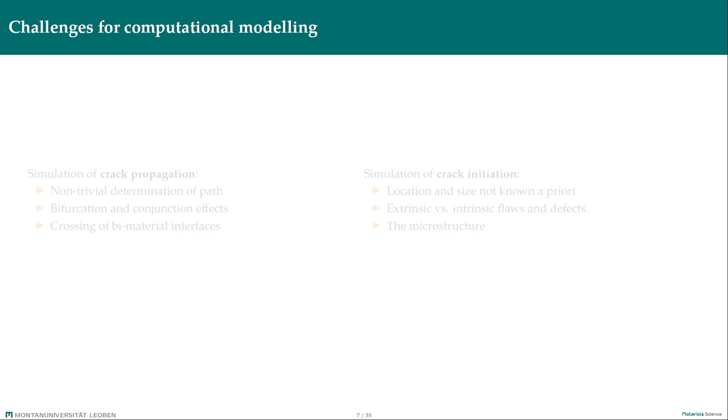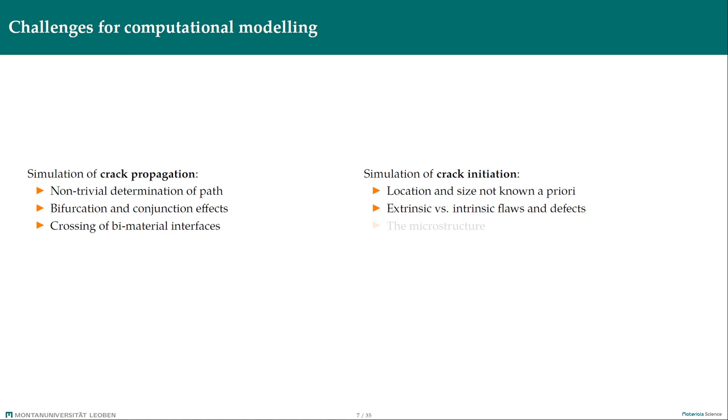Simulation of crack propagating through the specimen is connected with issue of determining the crack path. The crack path may depend on chosen method and assumptions. A crack could also bifurcate when crossing a bi-material interface or multiple cracks may conjure together. Modeling of these effects is really not trivial. Similarly with the modeling of crack initiation which is connected with the issue of not knowing the location and shape of cracks a priori. There are many flaws and defects in the microstructure and it would not be reasonable to include this into the model. Commonly these flaws are regarded as cracks such that they can be analyzed with the linear elastic fracture mechanics. The microstructure is usually omitted and it is regarded as a homogeneous continuum.